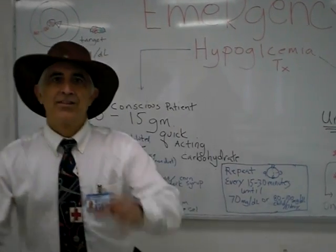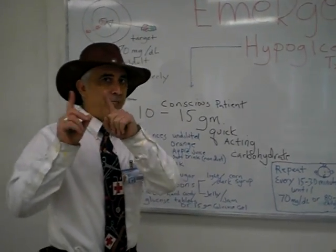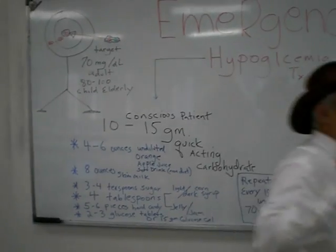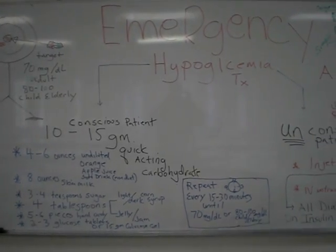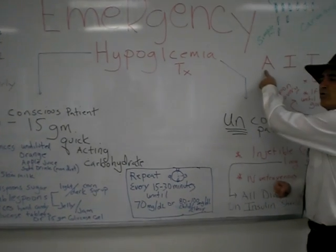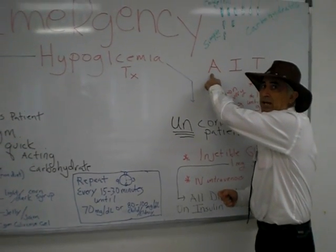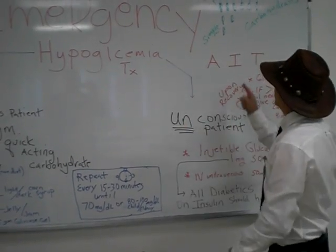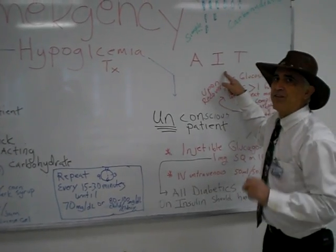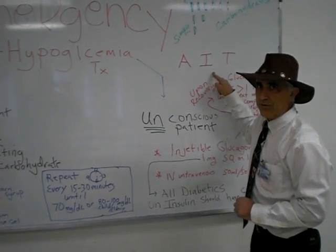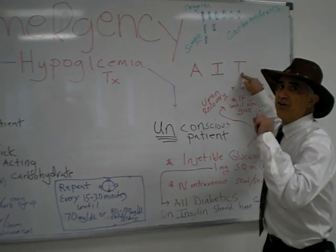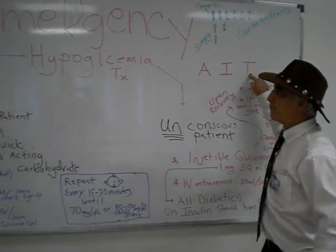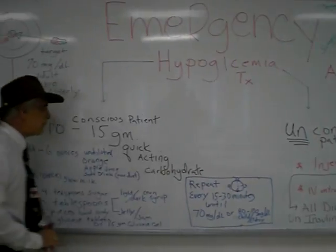This is our third episode on hypoglycemia. Remember three things that a nurse must be able to do: anticipate the patient at risk for a hypoglycemic episode so they're not taken by surprise and panic, identify when the patient is having a hypoglycemic episode, and know how to intervene — how to treat the patient. Here we go: hypoglycemia treatment.